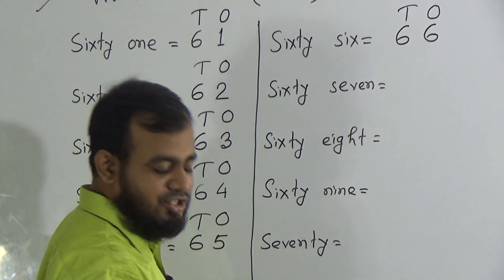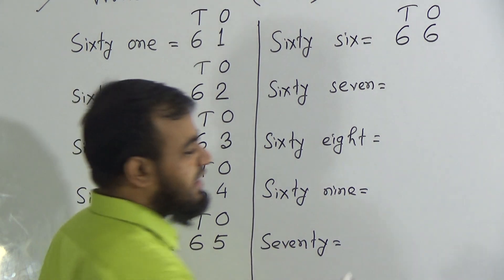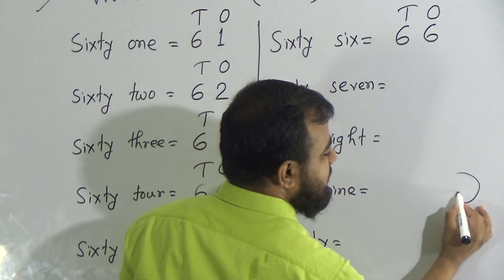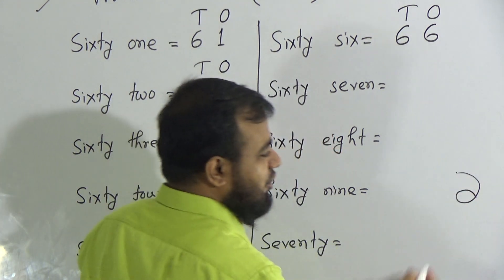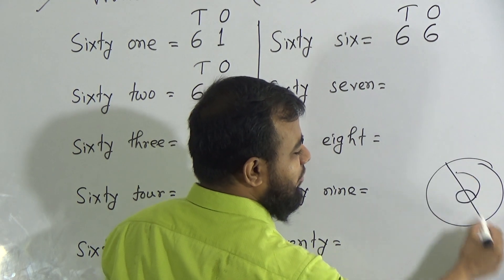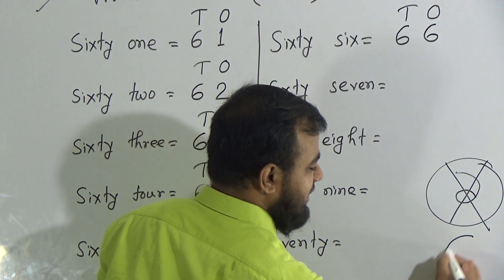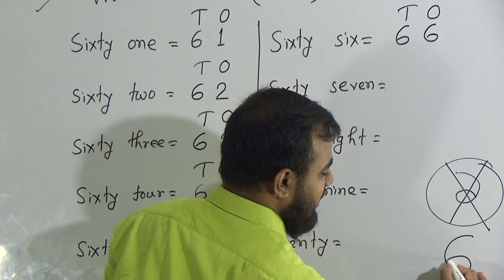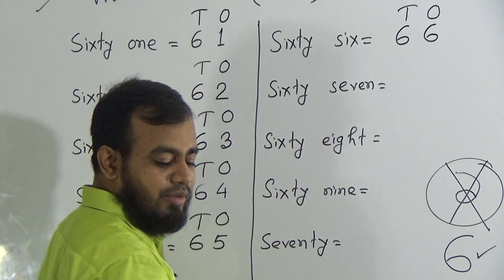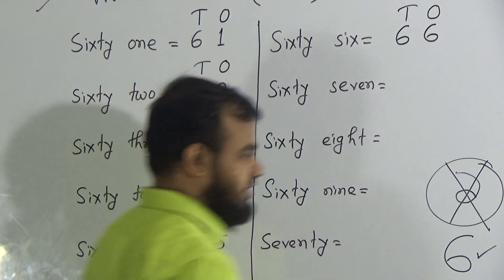In the half-year examination, some students wrote the number 6 in the wrong way. That is not the number 6 — it is the wrong process. The correct number 6 is written like this. Don't make that mistake again, dear students.